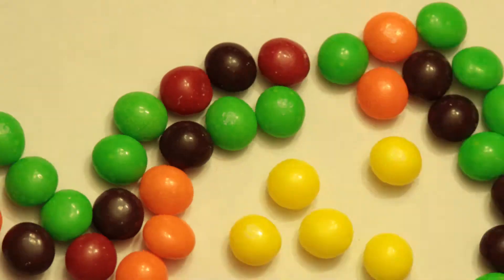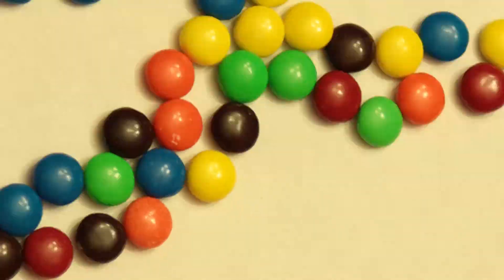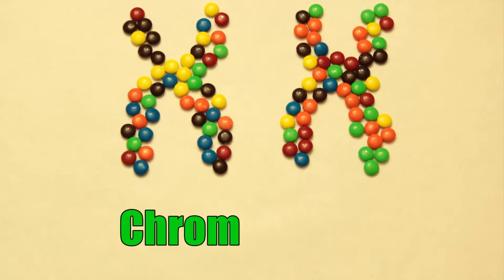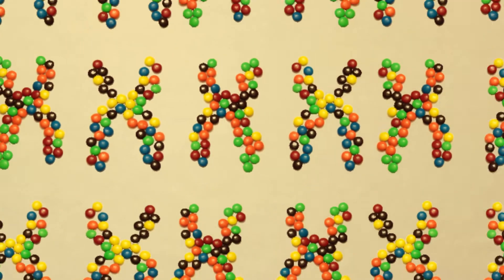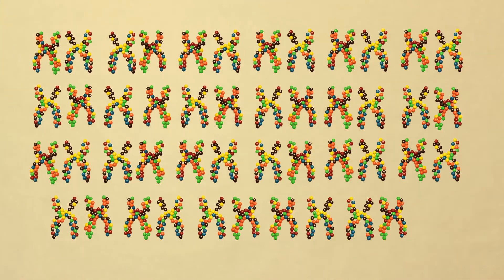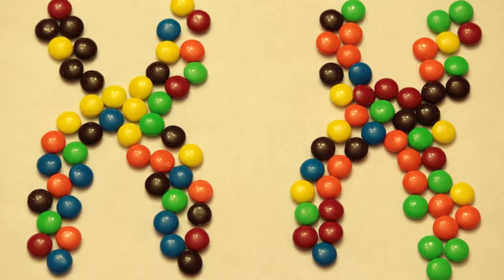But where do you get your genes? From your parents. Your DNA is wrapped together in structures called chromosomes. You have 23 pairs of chromosomes — half from your mom and half from your dad. Genes are sections of DNA carried on the chromosomes. Since you have two of each chromosome, you have two of every gene.